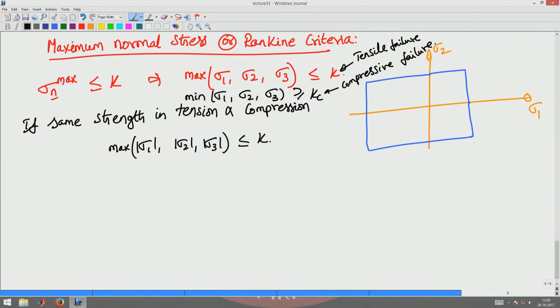If both are same then I can have just one equation which says what is the failure strength. This is maximum normal stress or Rankine criteria.